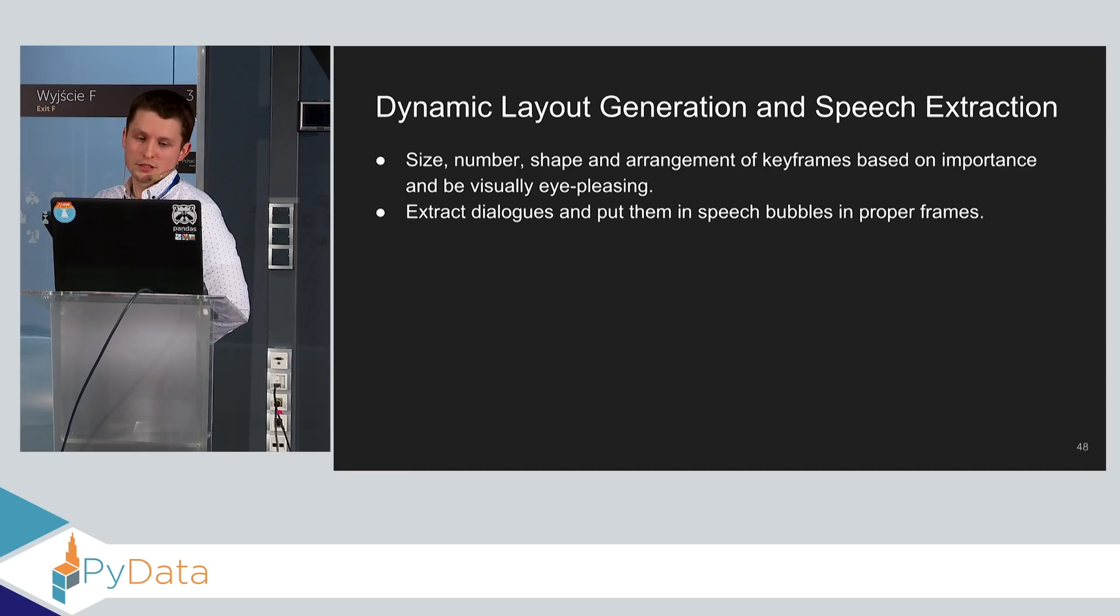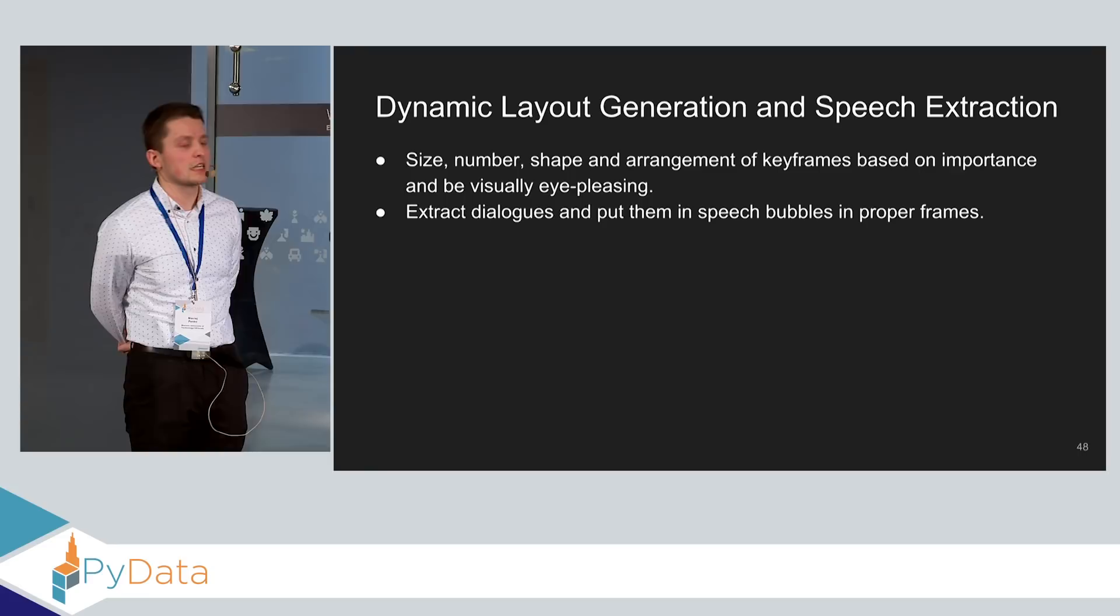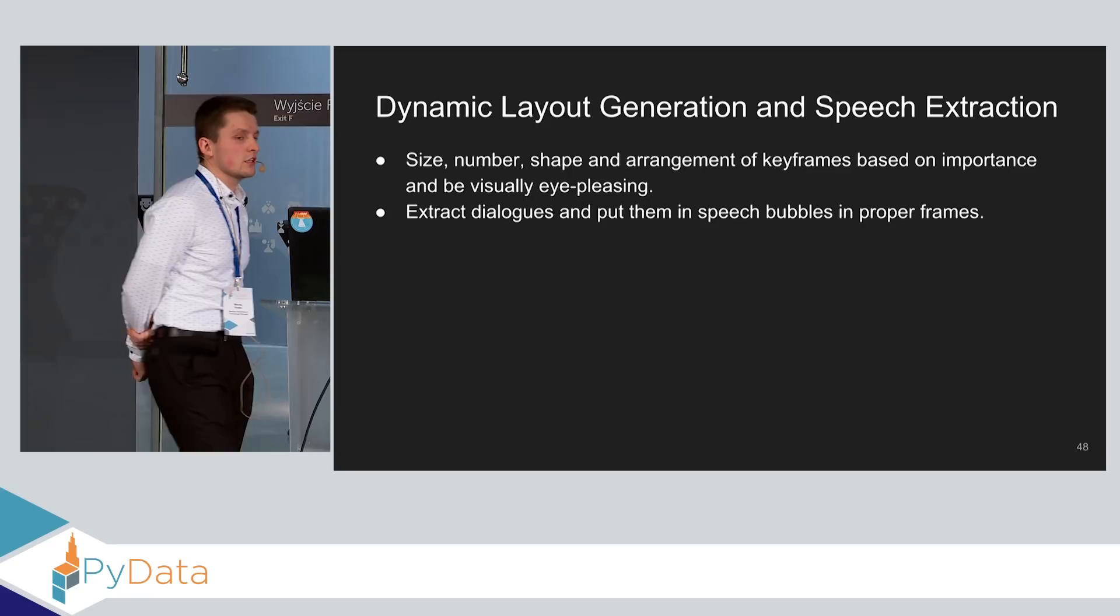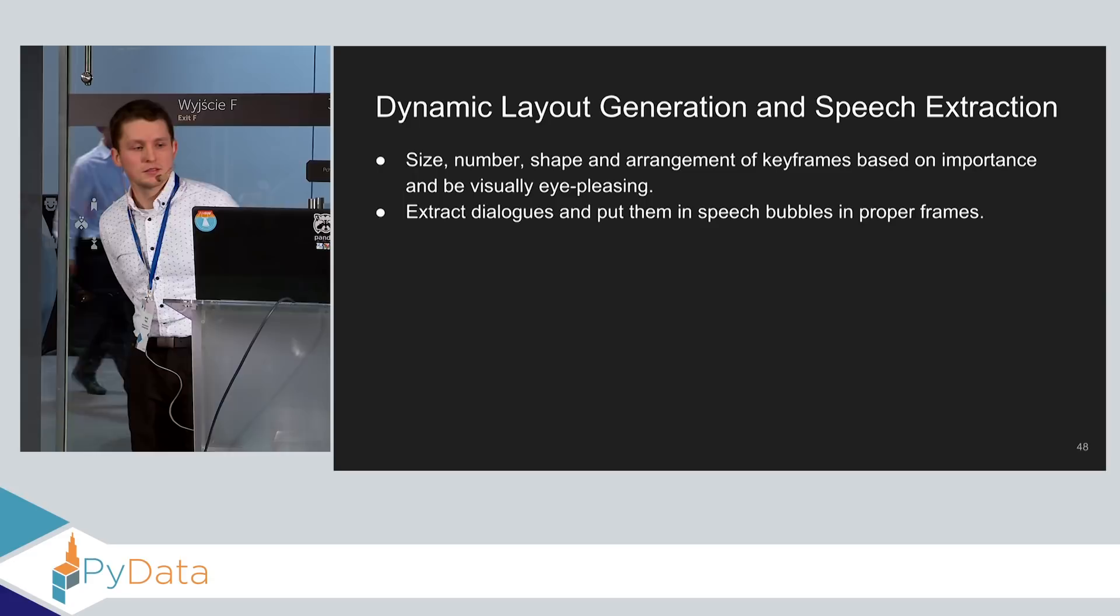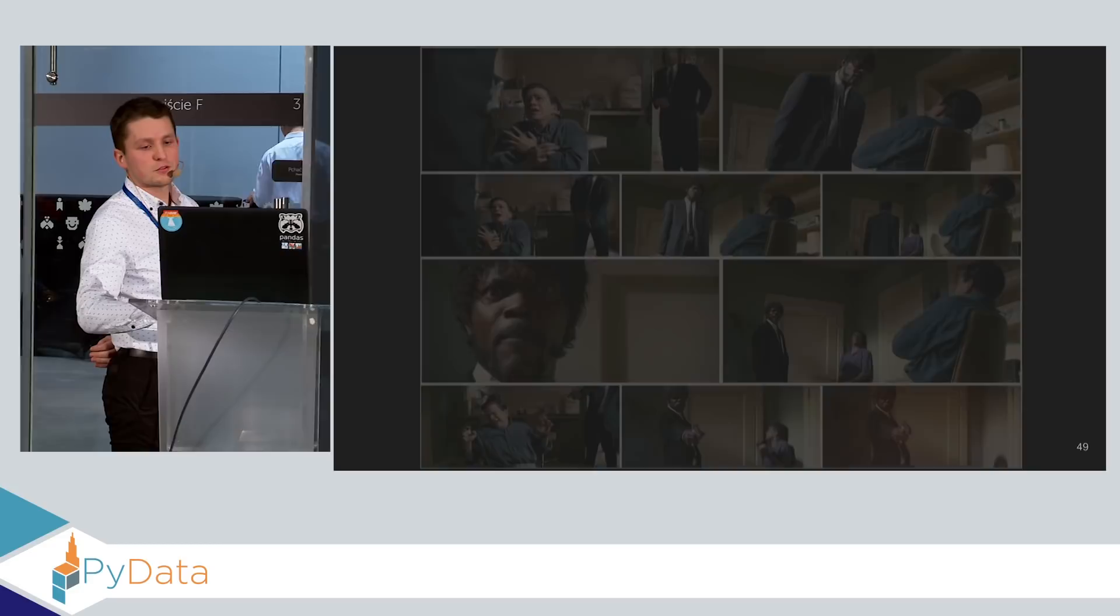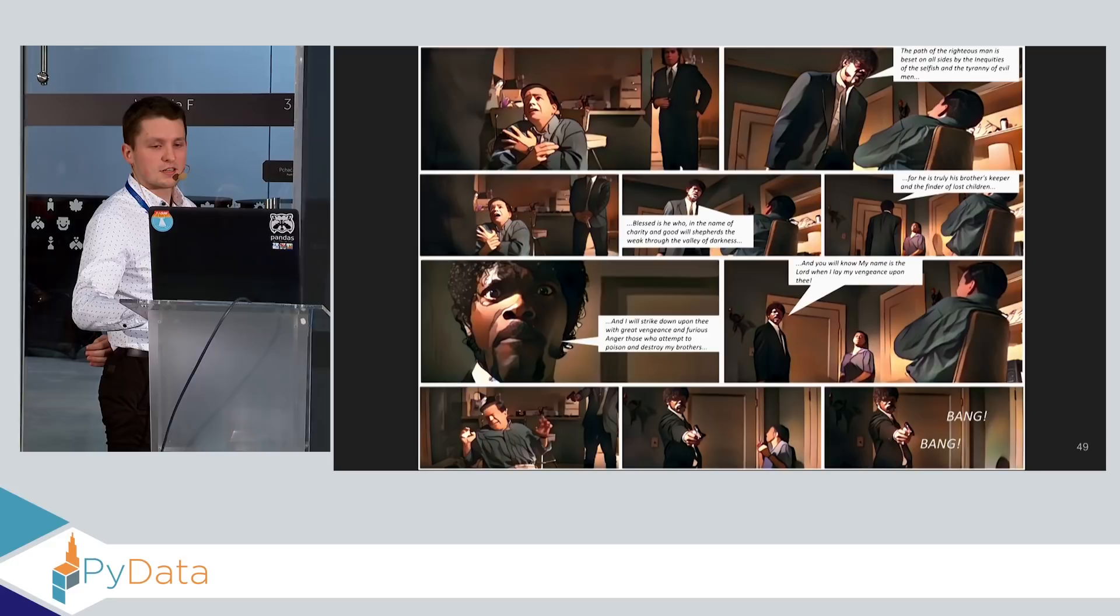And in further works, we would like to focus on two things. The first thing is to use dynamic layout generation. So the size, number, shape, and arrangement of keyframes, we would like to have based on their importance. And we would like to also have them in some kind of way visually eye pleasant. And we also would like to extract dialogues and put them in some speech bubbles in proper frames. So final solution, we would like to have to look like this after comicsification and more or less like this after using these speech bubbles.